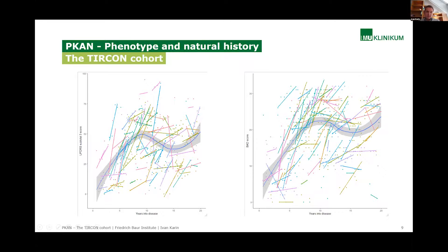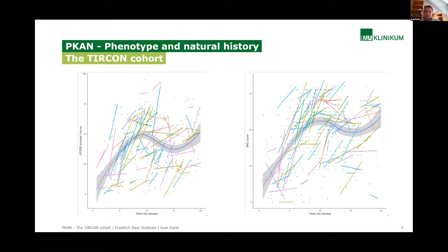The same pattern applies to the UPDRS motor impairment data. This occurs because the disease worsens by nature, then reaches a plateau since the BAD scale can only assess dystonia up to 32 points. After that, the atypical or milder PKAN phenotypes worsen much later — perhaps 15 to 20 years into the disease — causing the curve to grow again. We hope to enroll more patients to further validate these curves and gain more knowledge into the natural history of this disease.